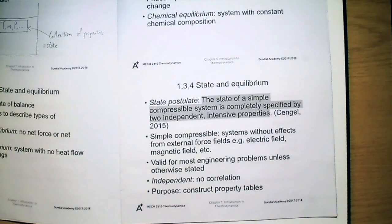Two properties are independent if they do not have any correlation. The state postulate is useful because it enables the construction of property tables in the appendix of the textbook. You will first use those tables starting from chapter 3.